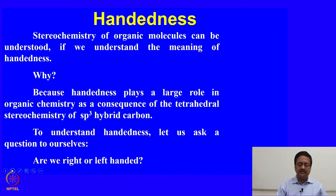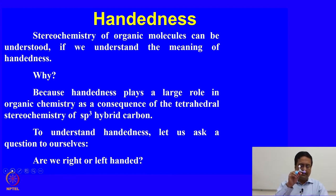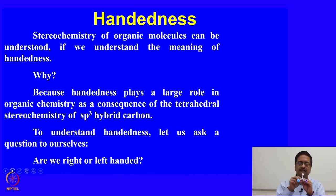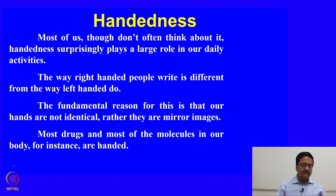The stereochemistry of organic molecules can be understood through the concept of handedness, which plays a role in organic chemistry as a consequence of the tetrahedral arrangement of sp3 carbon. An sp3 carbon has four atoms connected such that those atoms can be connected to the central atom in two different ways — either with the blue atom on the right and another on the left, or the reverse. The way right-handed people write differs from left-handed people for the same fundamental reason.